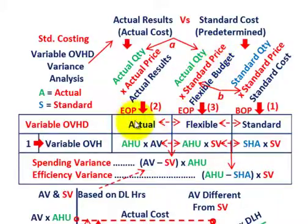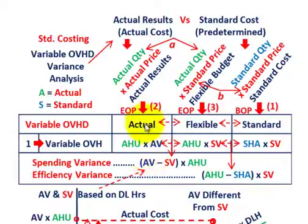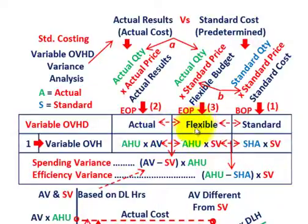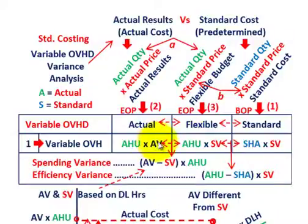For our variable overhead variances, we're going to have a spending variance and an efficiency variance. The spending variance is where we look at our actual amount versus our flexible budget amount. In terms of cost, it's some actual hours times some actual variable rate versus hours times a rate for flexible and standard amounts. The common factor between our actual and flexible amounts is the actual hours used.